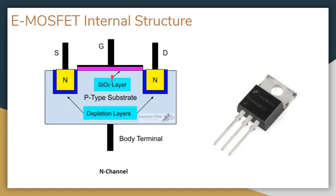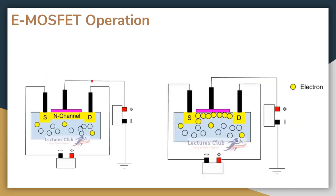So how does an E-MOSFET work? We apply a potential difference between the source and the drain, and the working of the E-MOSFET depends upon what potential difference we create between the source and the gate. The load is attached between the source and the drain.